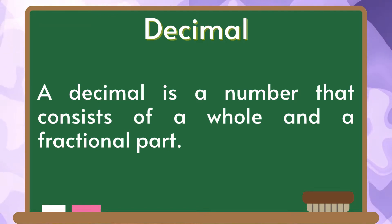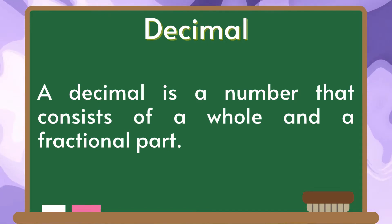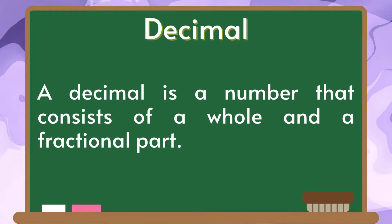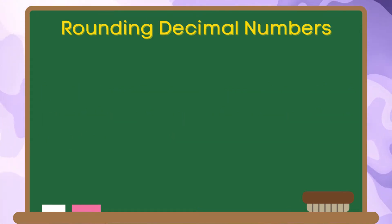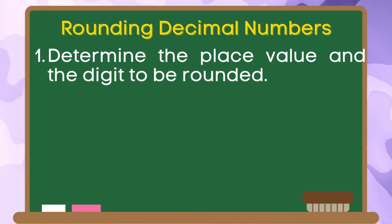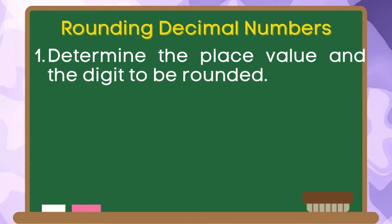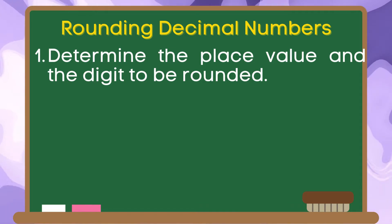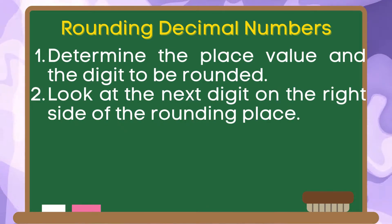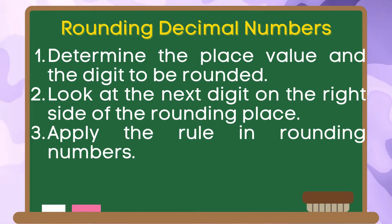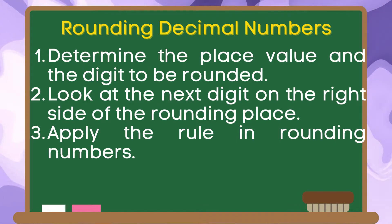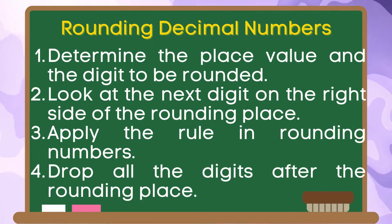A decimal is a number that consists of a whole number and a fractional part. To round decimal numbers, here are the steps to follow. First, determine the place value and the digit to be rounded. Second, look at the next digit on the right side of the rounding place. Third, apply the rule in rounding numbers. And lastly, drop all the digits after the rounding place.